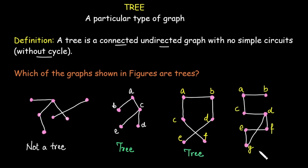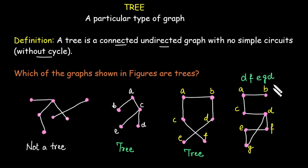What about the final graph? This graph is also connected and undirected. Does it contain any cycle or simple circuit? Yes — from D to F, F to E, E to G, G to D. We get a path that starts and ends at vertex D without repetition of any edge. So it contains a simple circuit, due to which this graph is not a tree.